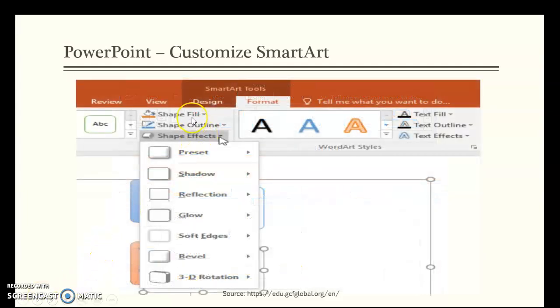And then again, also in the smart art tools, not only can you change the shape fill and the outline, but you can change the shape effects with the shadow, reflection, glow, and so forth.